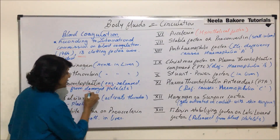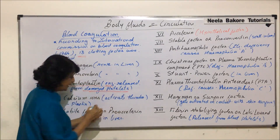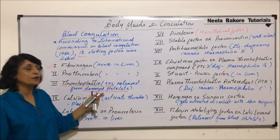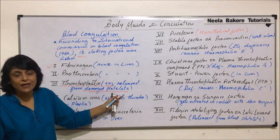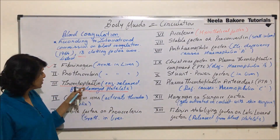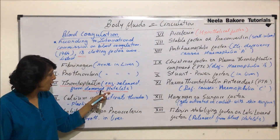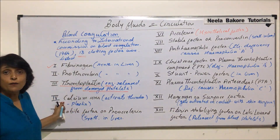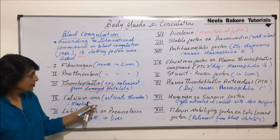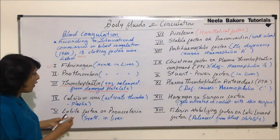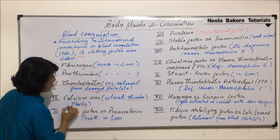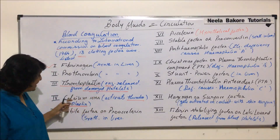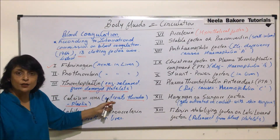The third factor is thromboplastin, which acts as an enzyme released from damaged platelets. Its activity is initiated whenever there is damage to the blood vessel and the platelets are injured. The fourth factor is calcium ions, which are responsible for activation of thromboplastin — so thromboplastin is the enzyme and calcium ions are its activators.